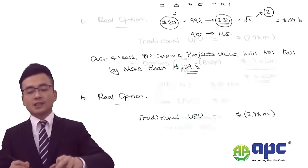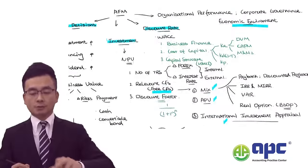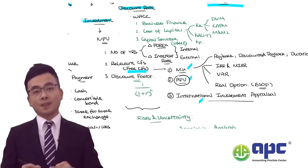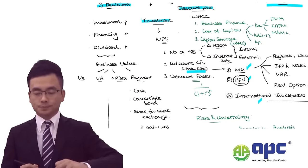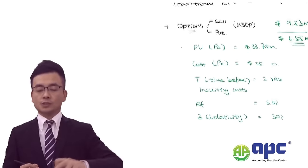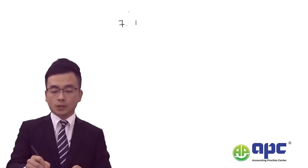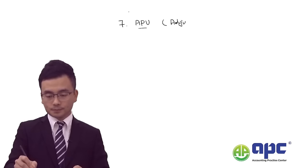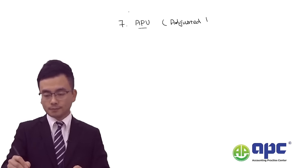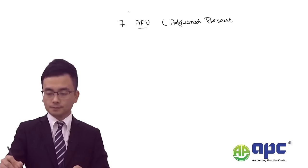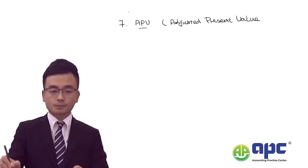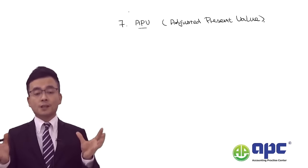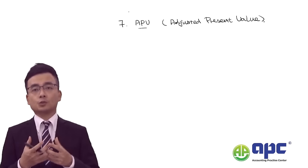Now let's revise the second category from the investment decision: APV (adjusted present value) analysis. In the past, using NPV analysis we mixed all cash flows — operating and financing — together, discounting them all using WACC.